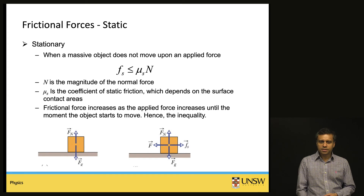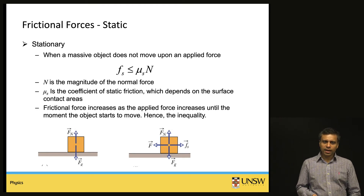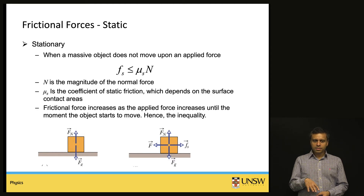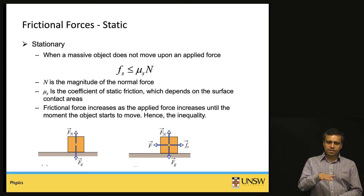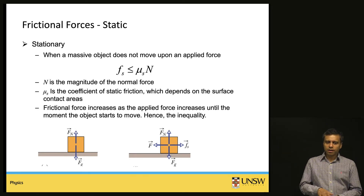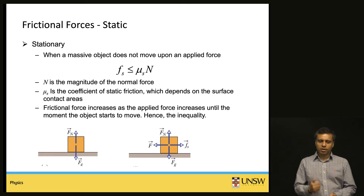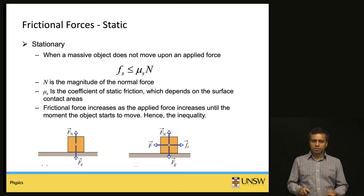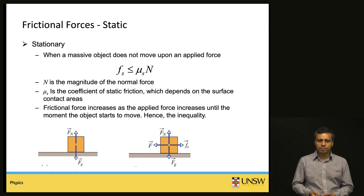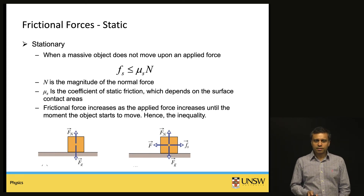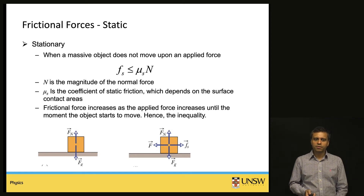The larger the normal force, the higher the force of static friction, because the object presses harder against the surface. The coefficient of static friction μs is a property of the surface and the contact region between the two objects. If the surface is rough, this coefficient is larger; if the surface is smooth such as ice, it is smaller. The static frictional force Fs is less than or equal to μs times N — where μs·N is the maximum static frictional force you must overcome to set the object in motion.